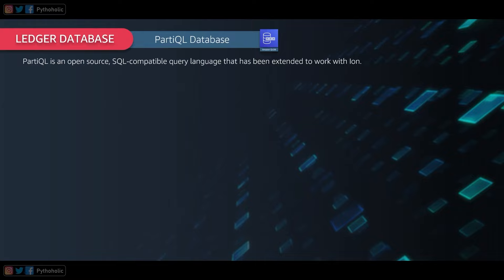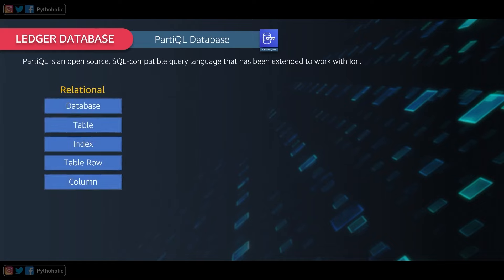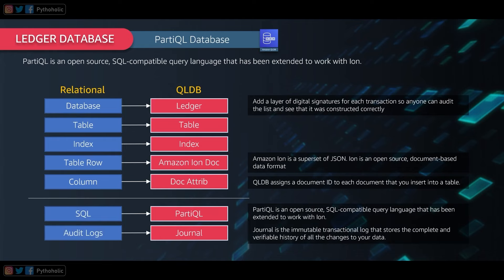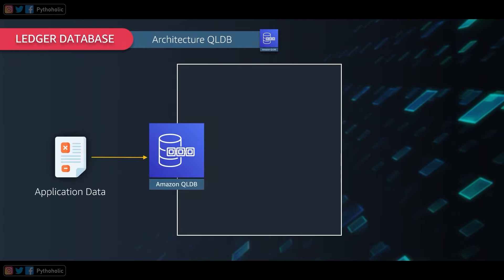Now let's talk about PartiQL. The query language QLDB uses is PartiQL, which is like SQL but designed to work with Ion documents. In a relational database you have: database, table, index, table row, and columns — with SQL as the query language. In QLDB the equivalents are: ledger, table view, index, Amazon Ion document, and document attribute (with a document ID), using PartiQL — an open-source SQL-compatible query language for Ion. Audit logs in relational DBs correspond to journals in QLDB.